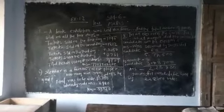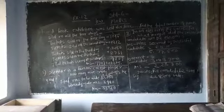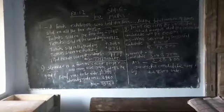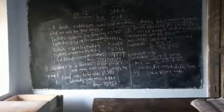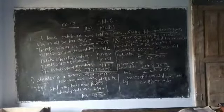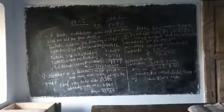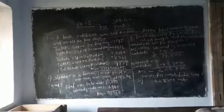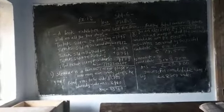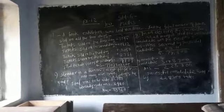A book exhibition was held for four days in school. The number of tickets sold at the counter on the first, second, third, and the final day respectively. First day: 1094, second day: 1812, third day: 2050, and fourth day: 2750. Find the total number of tickets sold on all four days.